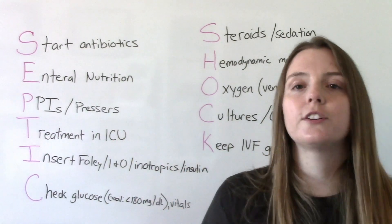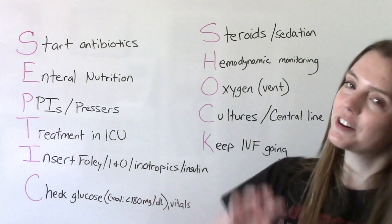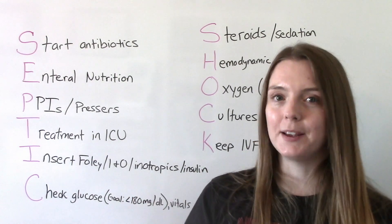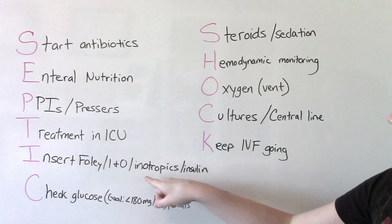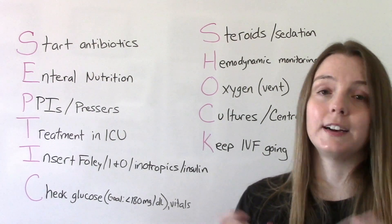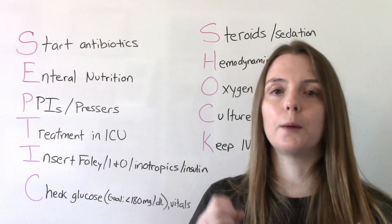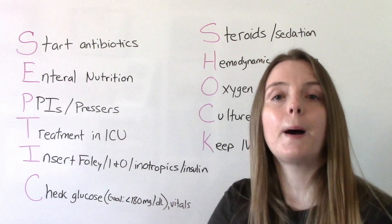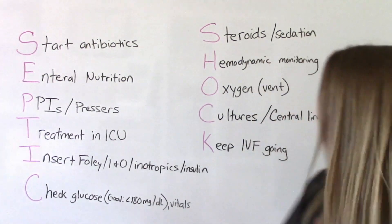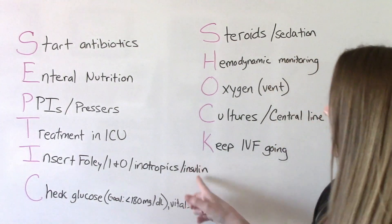T is for treatment in the ICU — these patients are very ill and unstable and need an intensive care setting. For the first I, we're going to insert a Foley catheter because we need strict intake and output monitoring to know if they're making urine. Inotropic medications — partly why they're in the ICU — help the heart beat stronger, addressing the poor perfusion caused by the heart not pumping effectively. They might also need insulin, as they can have very high blood sugars that require control, possibly even an insulin drip.